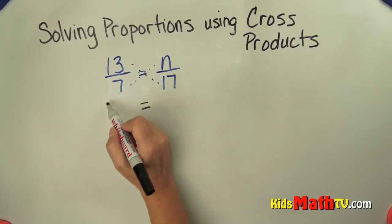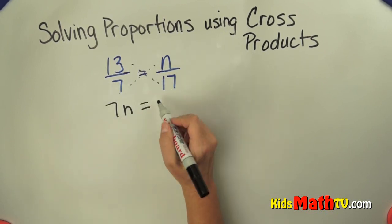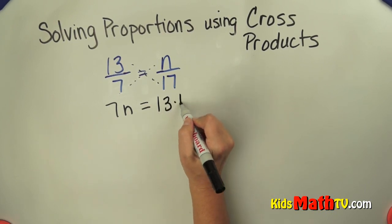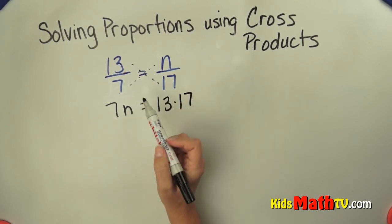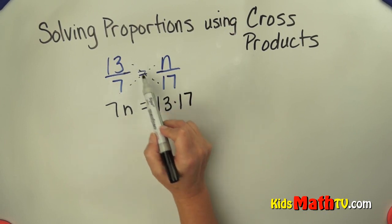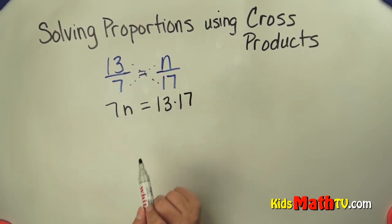So we do 7 times n equals 13 times 17. So we have this product and this product are equal to each other.